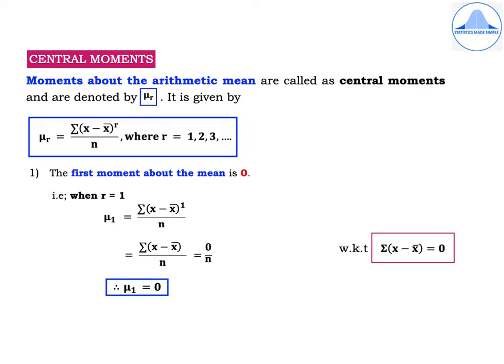Let us learn how to calculate the first central moment. The first moment about the mean is 0. Put r = 1 in the formula: μ1 = Σ(x − x̄)^1 / n = Σ(x − x̄) / n. We know that Σ(x − x̄) = 0, from the property of arithmetic mean that the sum of deviations from the mean is 0. So 0 / n = 0, meaning μ1 = 0.